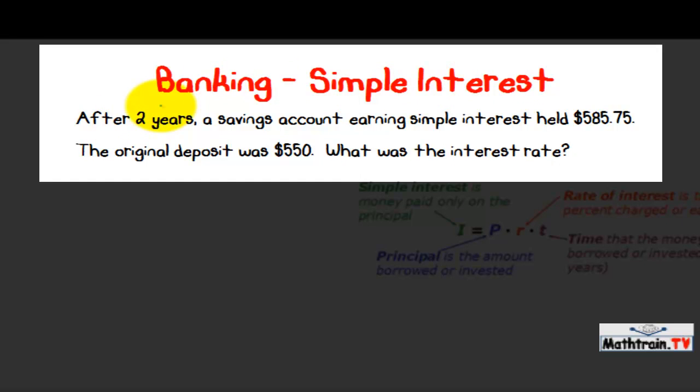It says, after two years, a savings account earning simple interest held $585.75. The original deposit was $550. What was the interest rate?